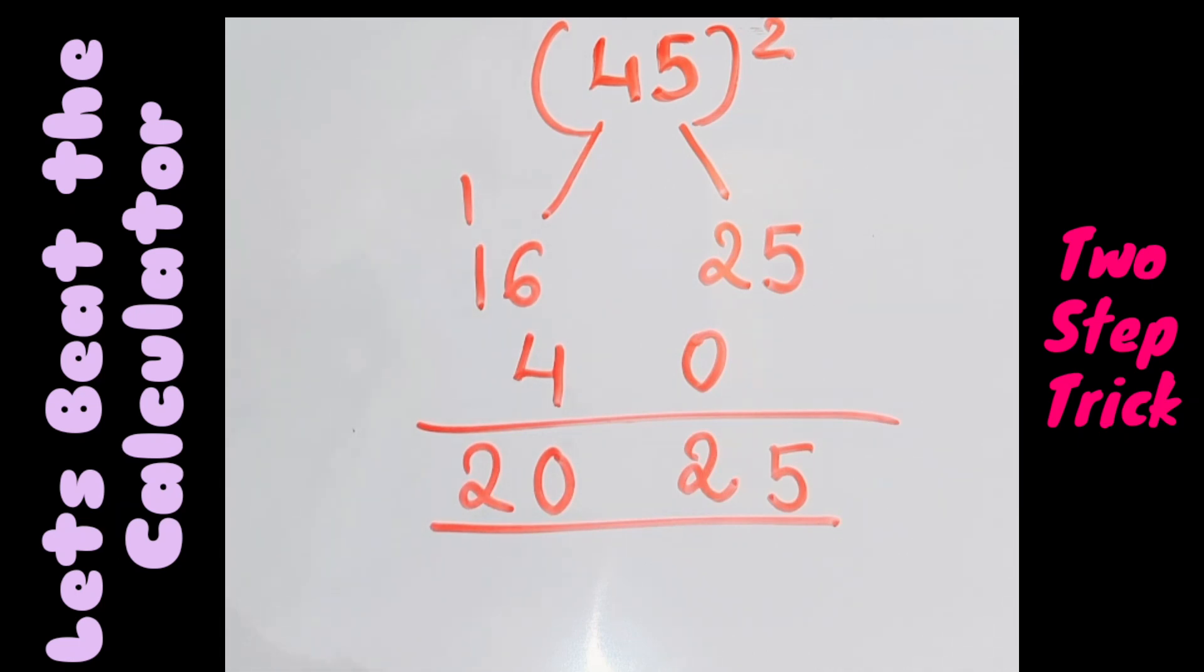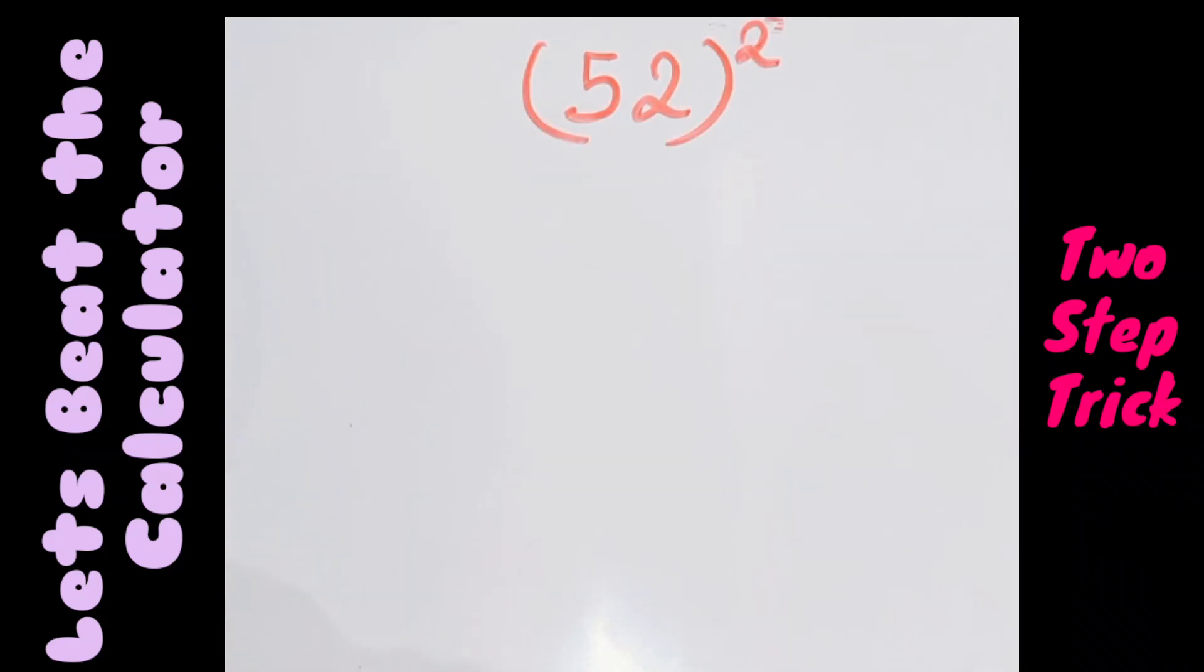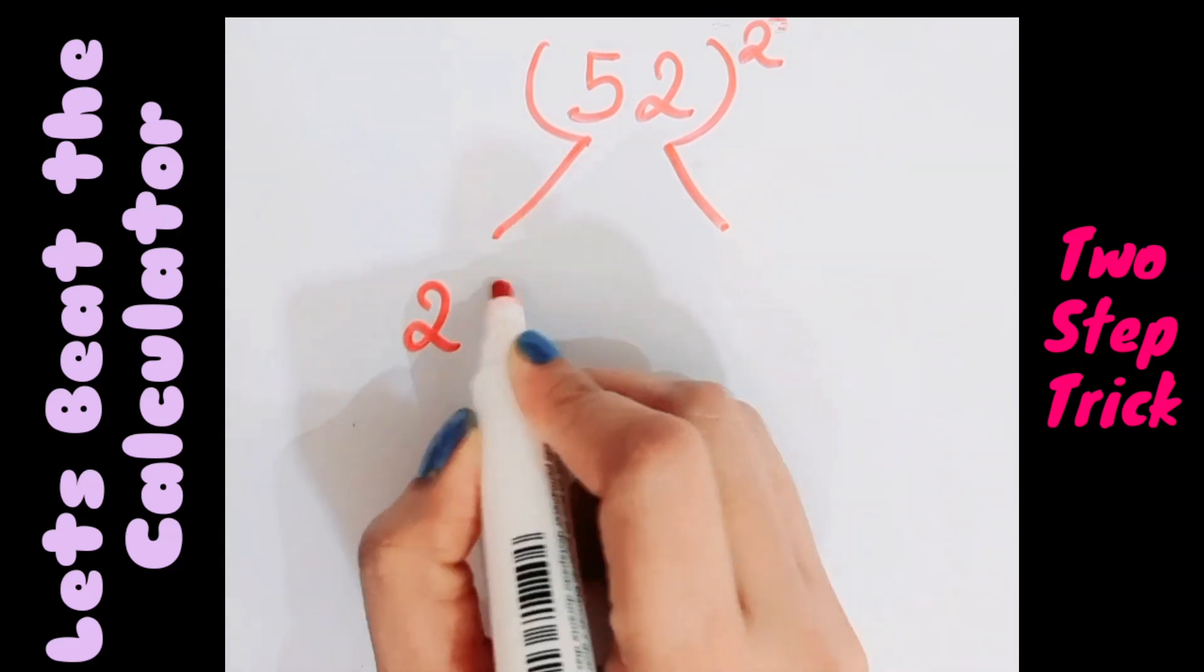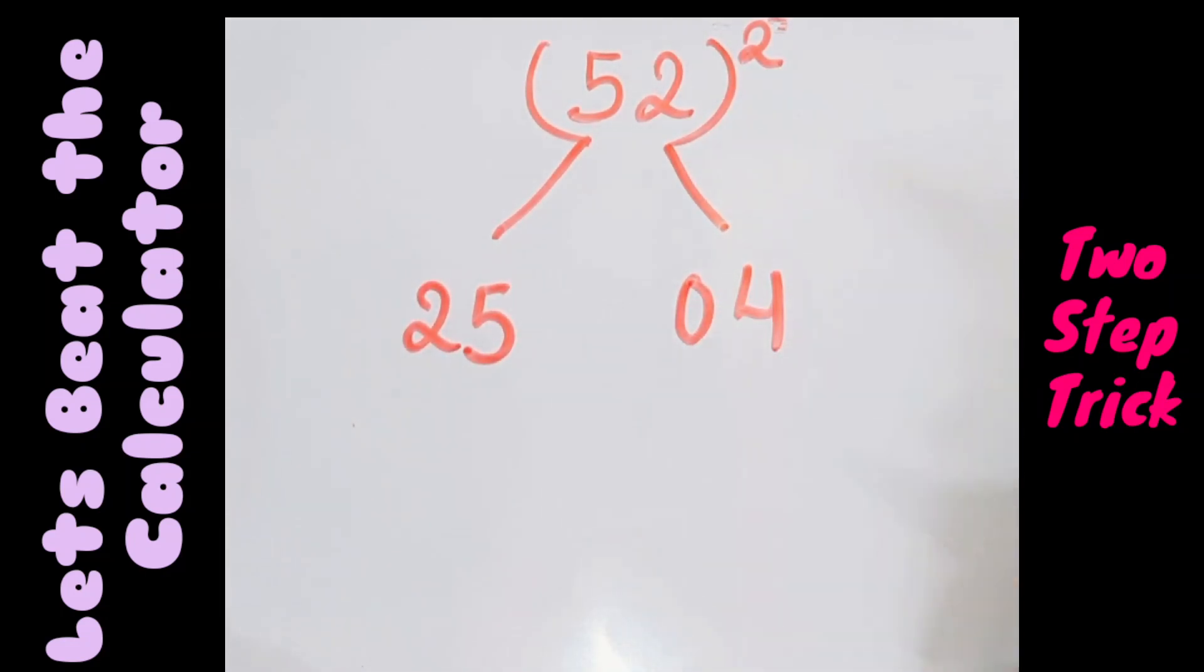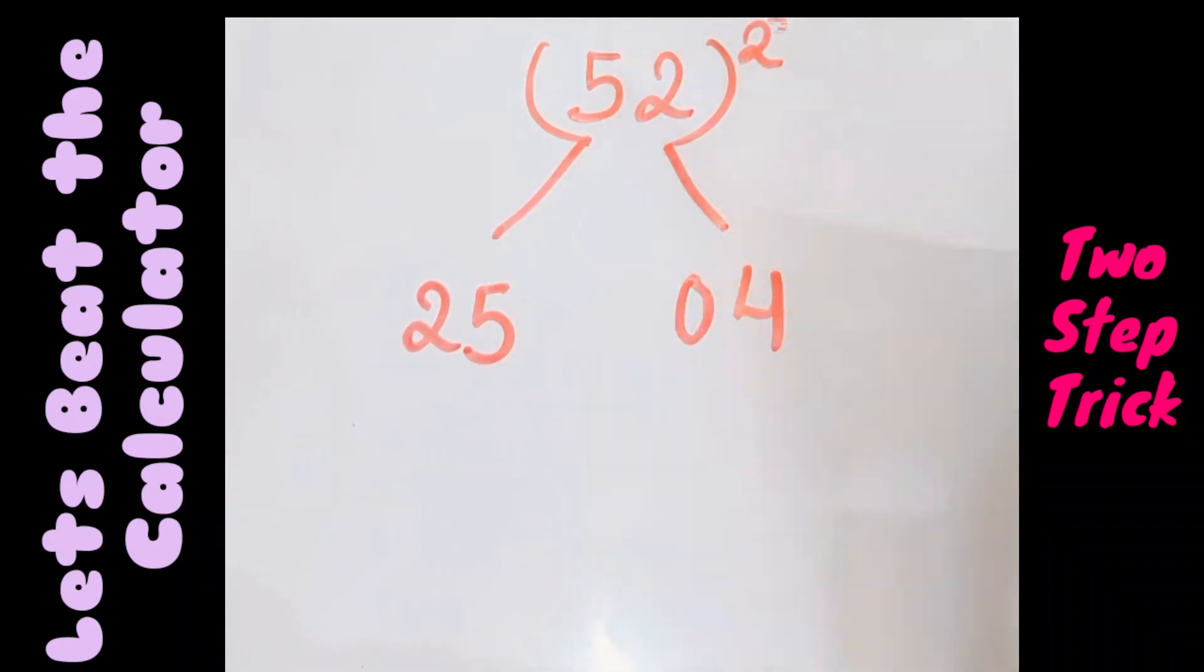Next question, if the question is 52, find the square of 52. What we have to do is 2 square and 5 square. So 5 square is 25, 2 square is 4, so we'll write it as 04. Multiply all these three: 5 into 2 is 10, 10 into 2 is 20.